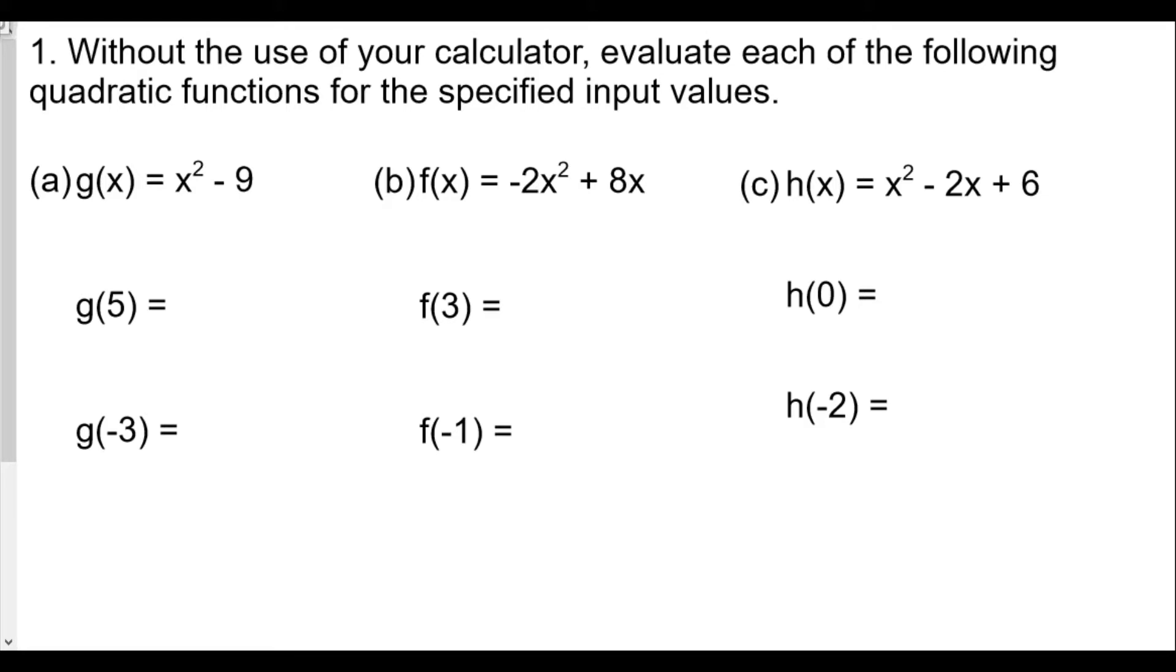Our first question is: without the use of a calculator, evaluate each of the following quadratic functions for the specified input values. What makes this quadratic is that these are polynomial functions and the highest exponent is two. All we're doing for this question is plugging in numbers for each of the functions. For part a, we're going to plug in five for g of five. So five squared minus nine is 25 minus 9, which is going to be 16.